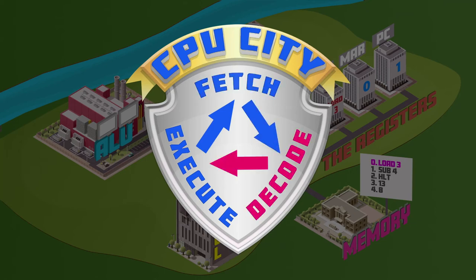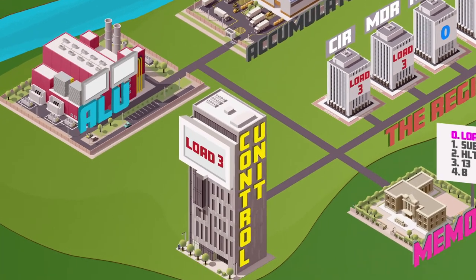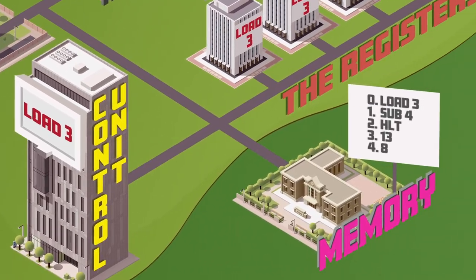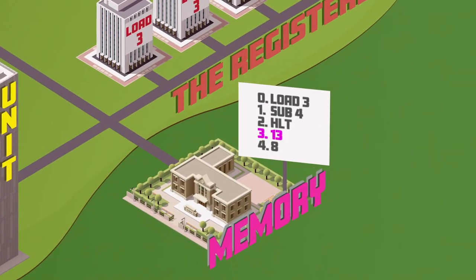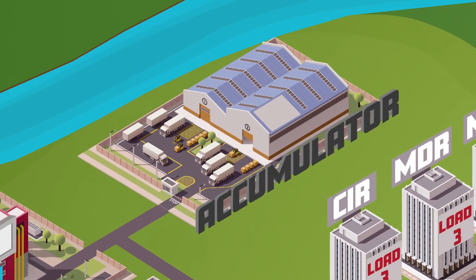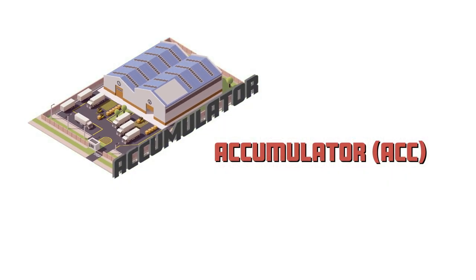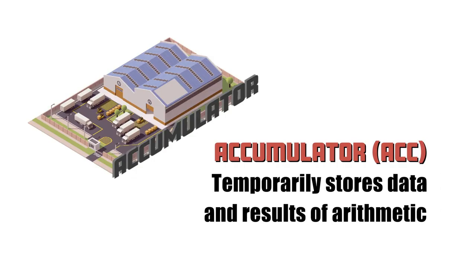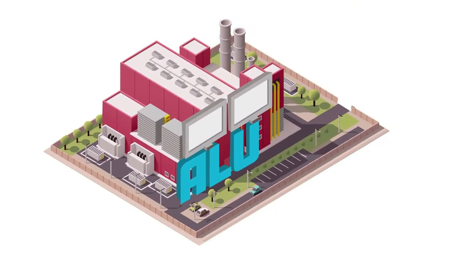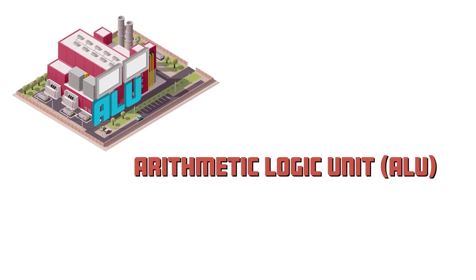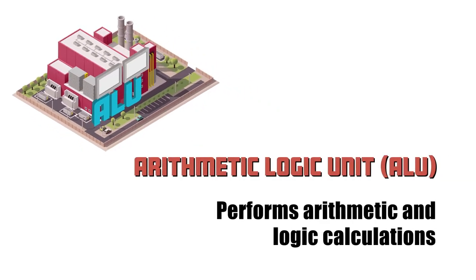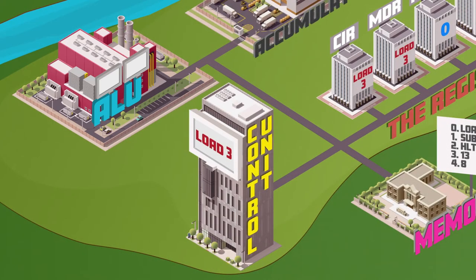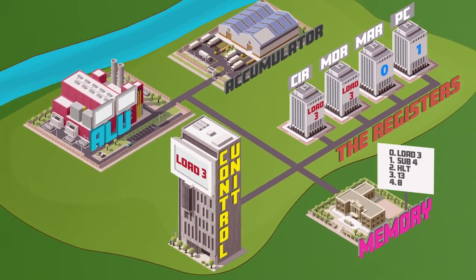Now starts the decode stage. The control unit decodes the instruction 'load three' to mean: load the value at memory location three into the accumulator. The accumulator is another special purpose register — it's like a warehouse where data is temporarily stored while mathematical and logical operations are performed by the arithmetic logic unit. The arithmetic logic unit is the factory of the city and uses data stored in the accumulator to process calculations. So now that the control unit has decoded the instruction, the decode stage is complete.